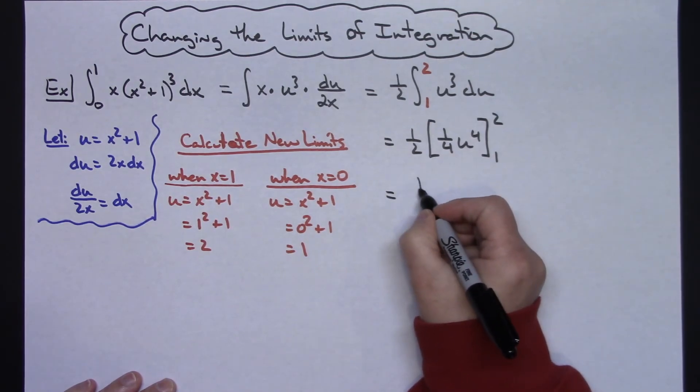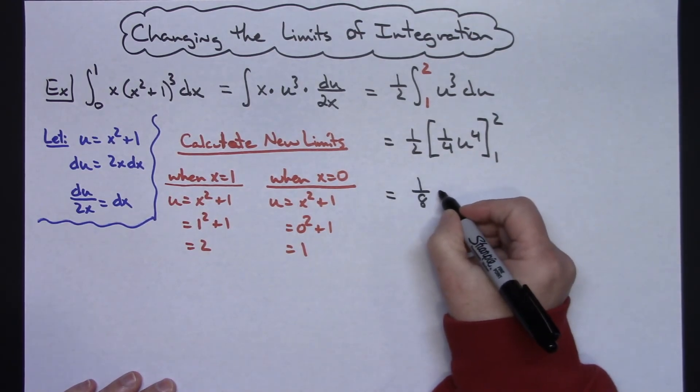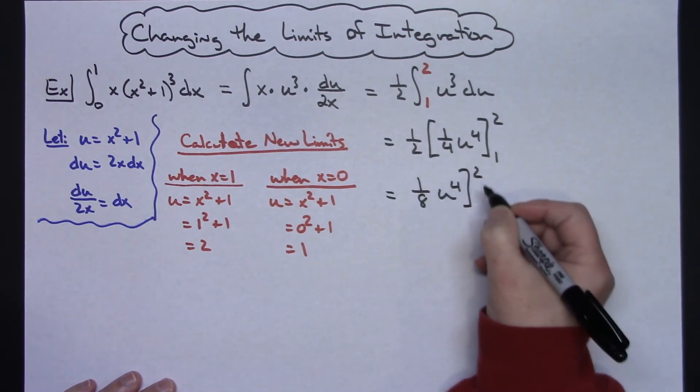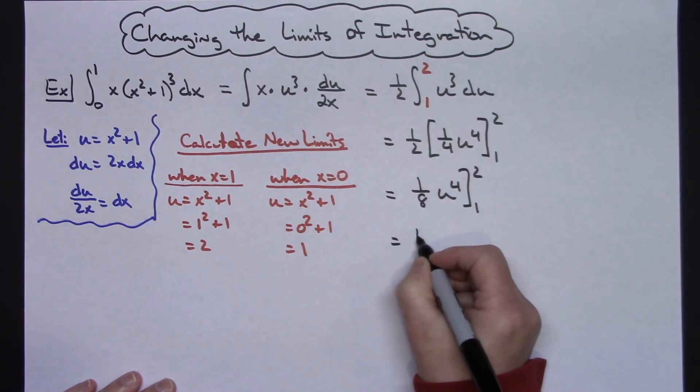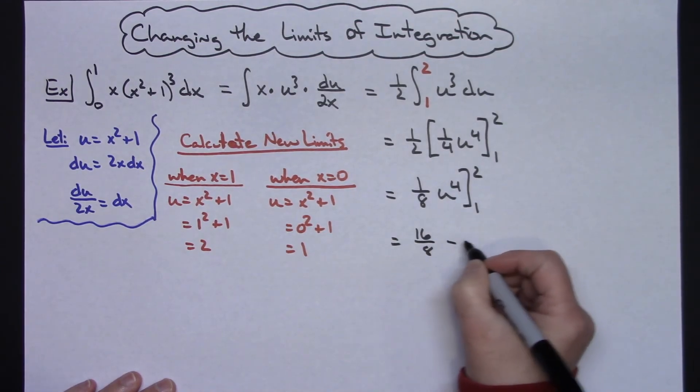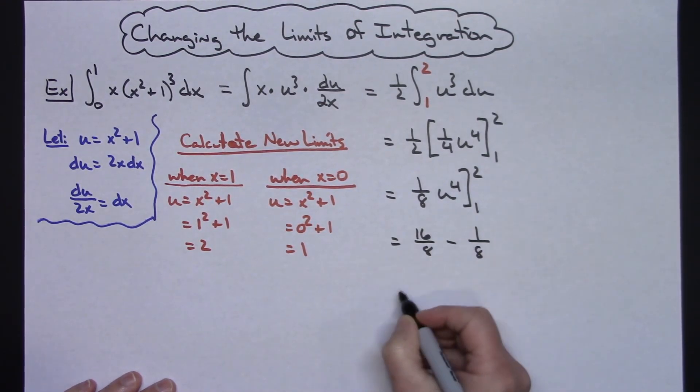Let's go down a little bit farther though, before I do it. 1 eighth u to the fourth, and then 2 and 1. And I think that's going to give me a 16 over 8 minus a 1 over 8. Yeah, so that comes out to be a nice little 15 over 8.